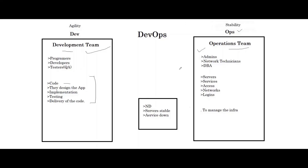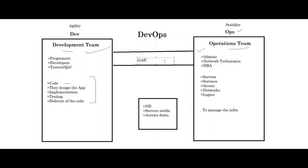From this, we can conclude that there is a gap between these two teams. What we need is good collaboration and communication between these two teams so they both could understand each other's challenges and work in an effective manner. So the question is how to eliminate the gap between these two teams. Here comes DevOps into the picture. DevOps came in to overcome the gap between these two teams.